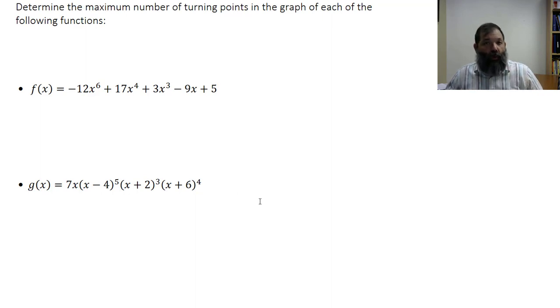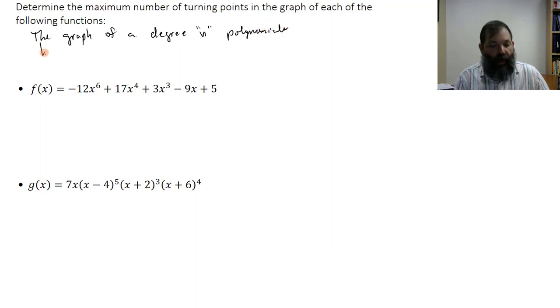It turns out that there's a very simple way to determine the maximum number of turning points. The graph of a degree n polynomial has, at most, n minus 1 turning points.